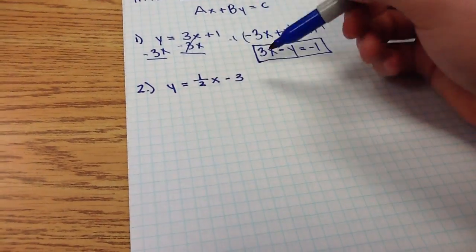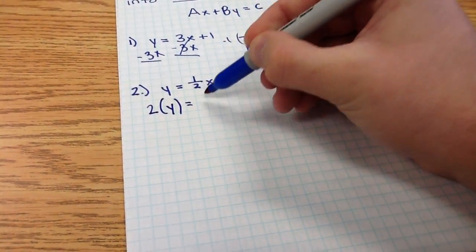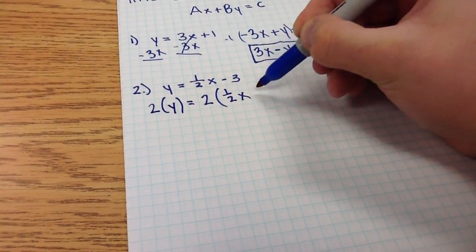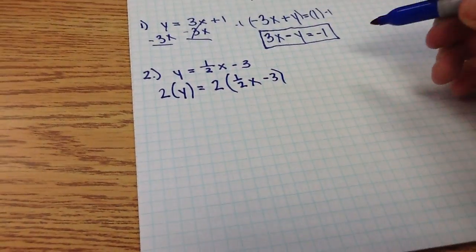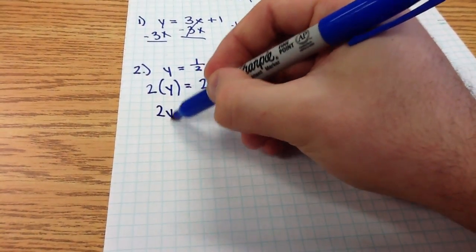So 2 times y equals 2 times one-half x minus 3. Now at this point, 2y is just that, it's 2y.